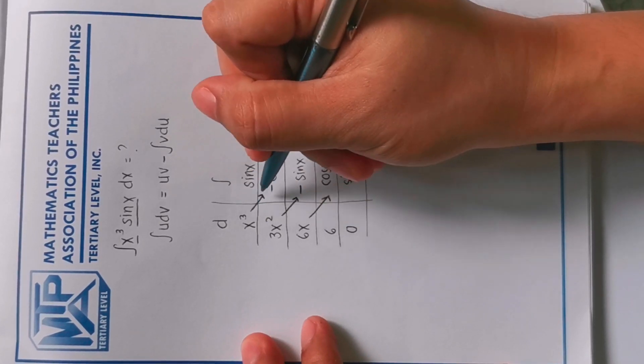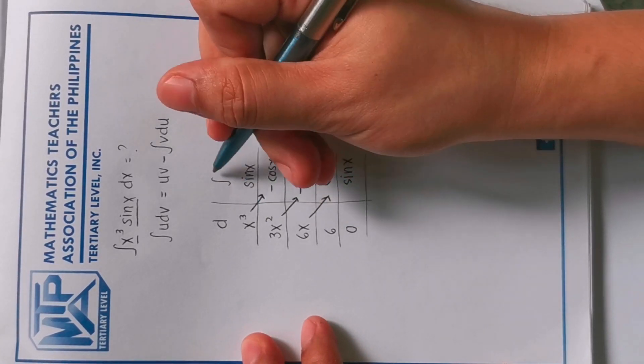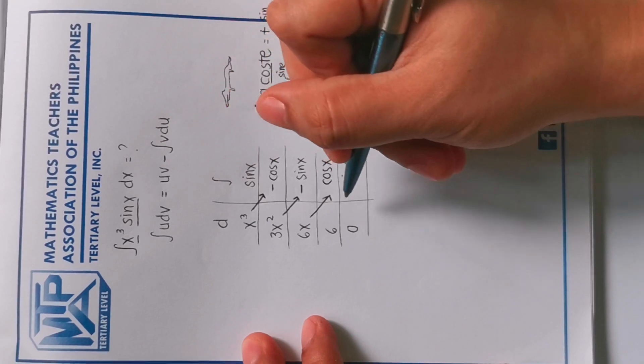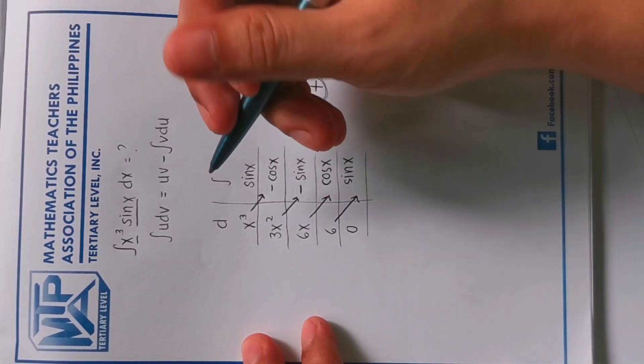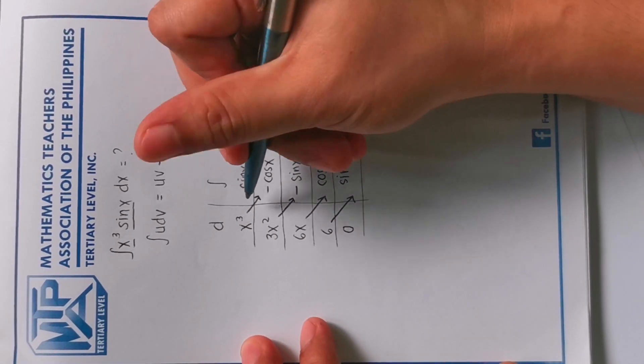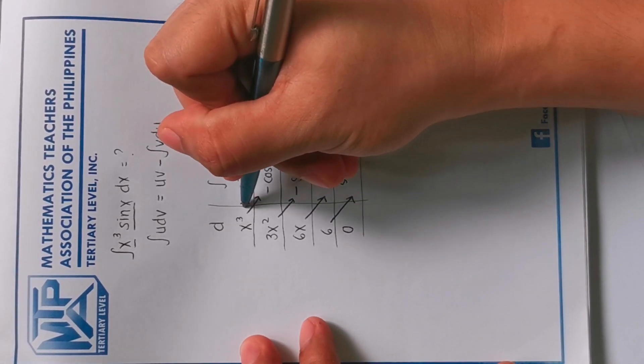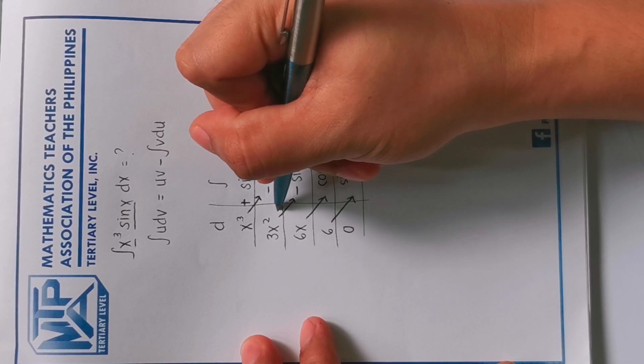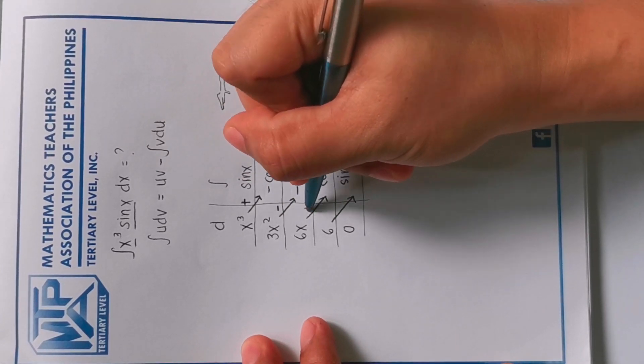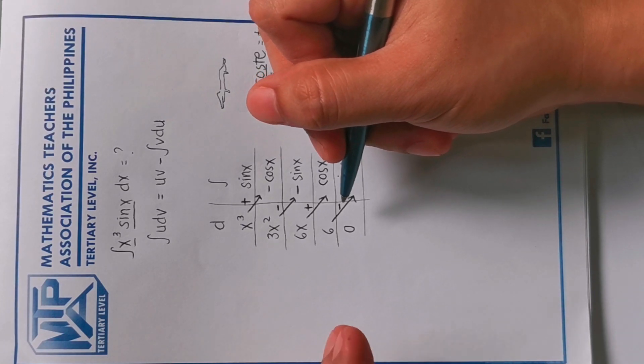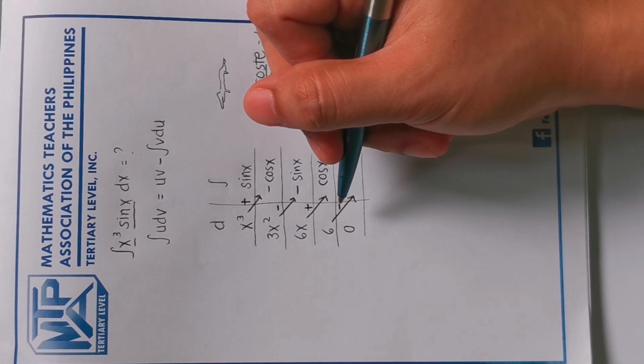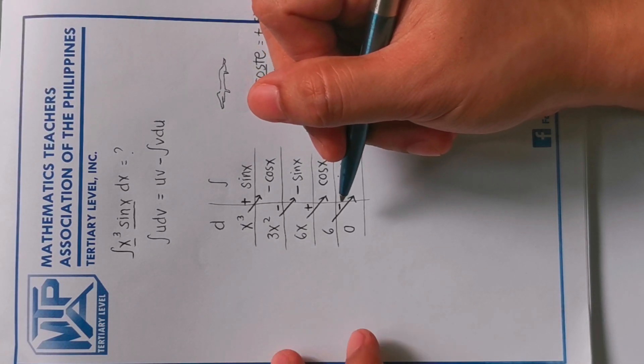So first term paired to the second term in the integral column, arrow down, arrow down. Then we will assign the signs. So first term will be positive, second term will be negative, third term will be positive, fourth term will be negative, and so on and so forth. If there are 11 terms, you will just use alternating signs, right.